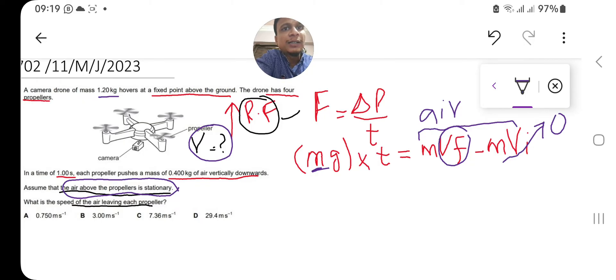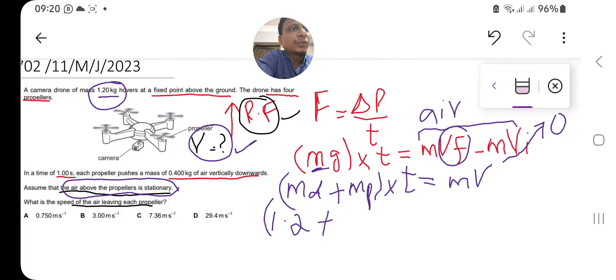The mass will be the total mass of the drone as well as the propeller. So mass of drone plus mass of propeller multiplied by time equals m·vf. I will term vf as just v. The mass of the drone is 1.2 kg.